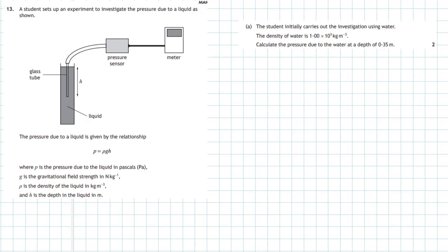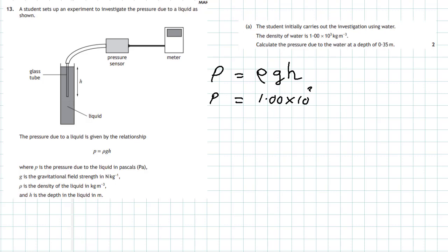For two marks, we are asked to calculate the pressure due to the water at a depth of 0.35 metres. Starting with the equation p equals rho times g times h, and substituting the numbers: pressure equals 1.00 times 10 to the power 3, multiplied by the gravitational field strength of 9.8, then multiplied by the depth of 0.35 metres. That gives an answer of 3430 pascals.